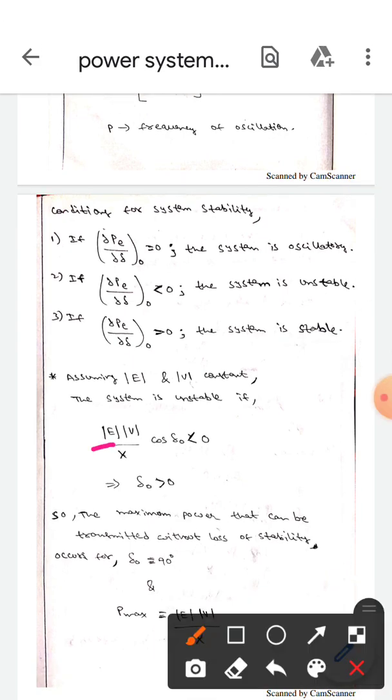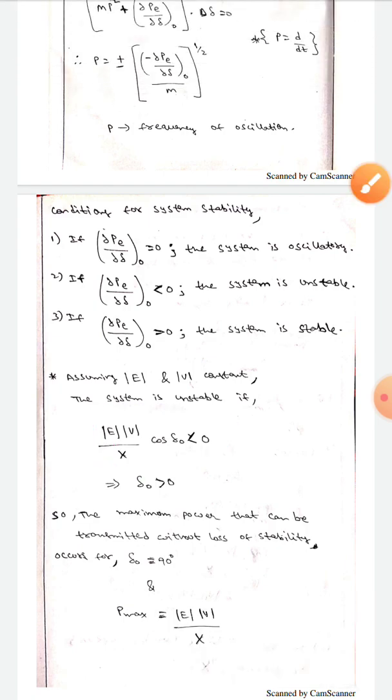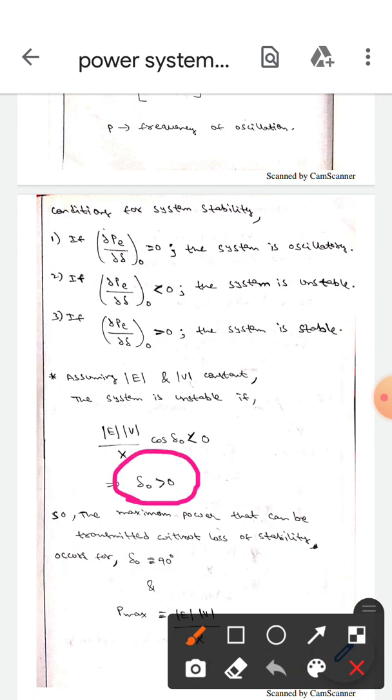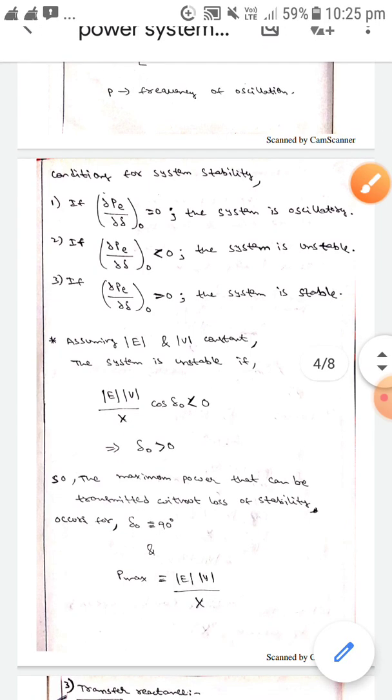Here, we assume that |E| and |V| are constant. Then the system is unstable if this is less than zero, which means δ0 is greater than 90 degrees.